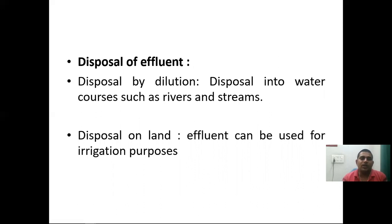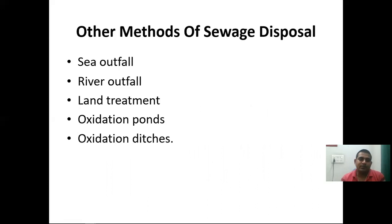Disposal of effluent: disposal by dilution involves discharging effluent to water sources such as rivers and streams. Disposal on land means the effluent can be used for irrigation purposes. Other methods of sewage disposal include sea outfall, river outfall, and land treatment using oxidation ponds.